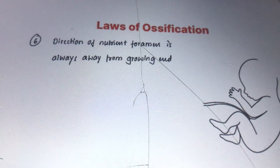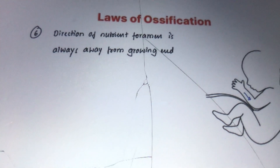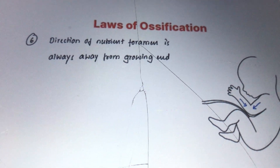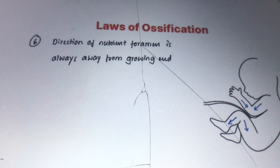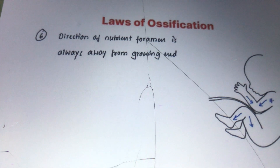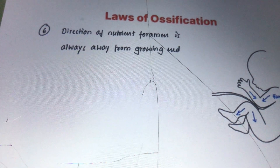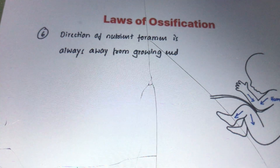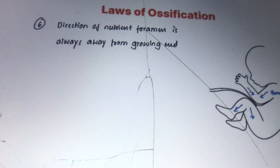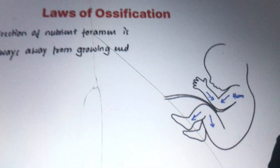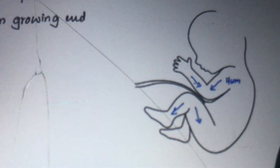In the upper limb, the nutrient foramina are directed towards the elbow. In the lower limb, they are directed away from the knee joint. For the humerus, the foramen points toward the lower end, meaning the upper end is the growing end. For the radius and ulna, the foramen points toward the elbow, so their lower ends are the growing ends.